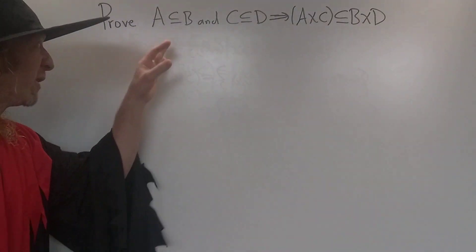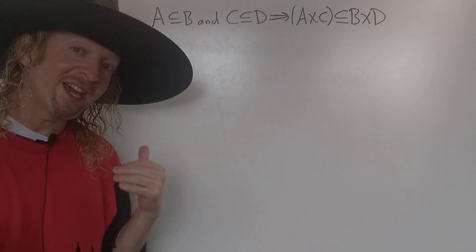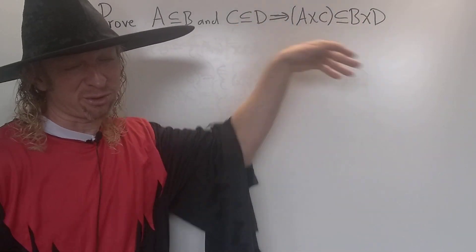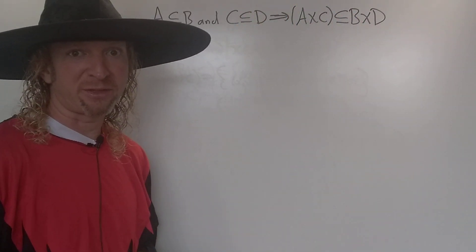What's up YouTube? In this problem we're going to prove that if we have A, a subset of B, and C, a subset of D, that A cross C is a subset of B cross D. It's just a straight-up set theory proof.